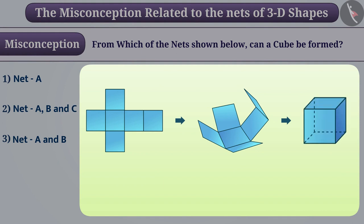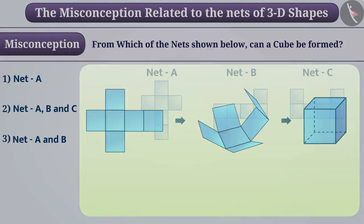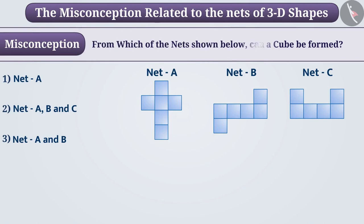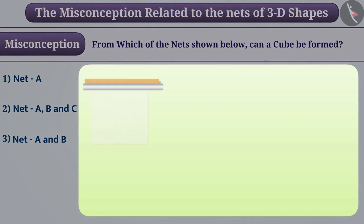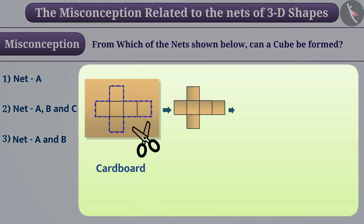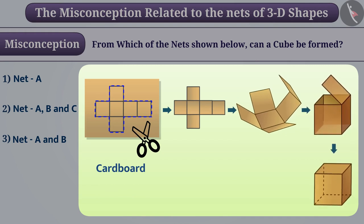Some children are unable to visualize which solid shape will be formed by looking at the net. They are unable to answer the given question. To overcome this problem, one should try to make a 3-dimensional shape by drawing and cutting the net on paper or cardboard. While doing this, which face of the net is being arranged in a 3-dimensional shape care should be taken.